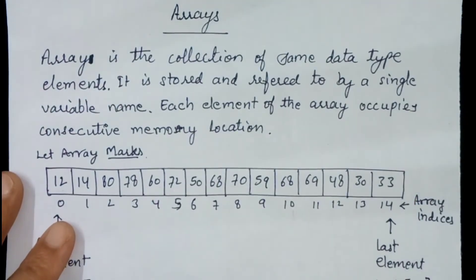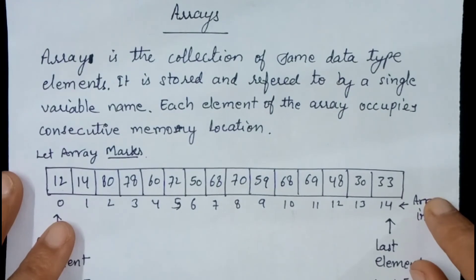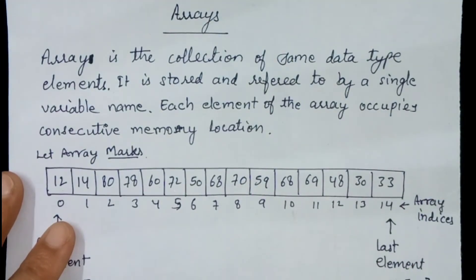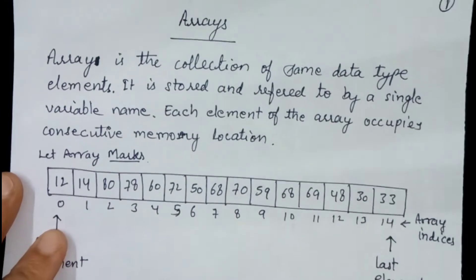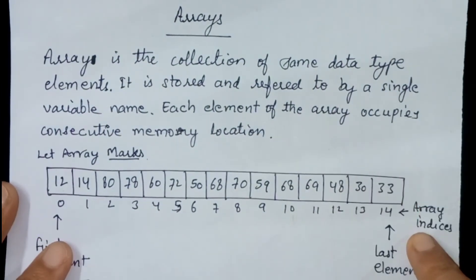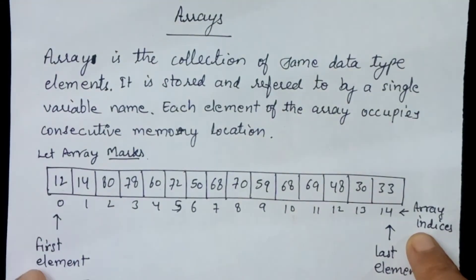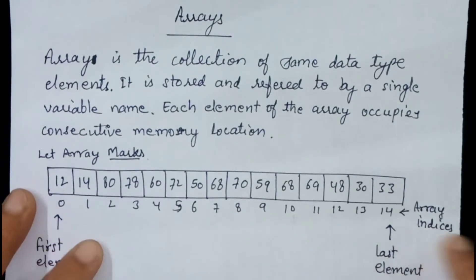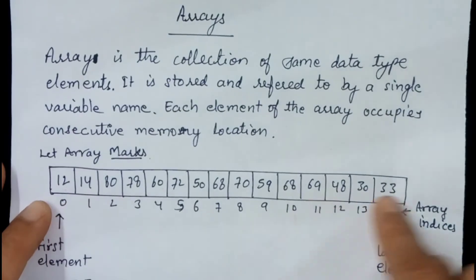What are Arrays? Arrays are the collection of same data type elements. They are stored and referred to by a single variable name. In Arrays, each element of the array occupies consecutive memory locations. Now, if we want to store the marks of the students, instead of declaring individual variables for each mark, we can store them in an array, because it is easy to handle a single variable instead of many variables.